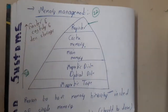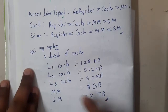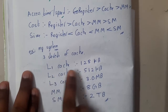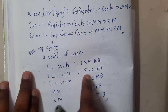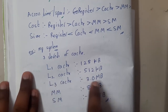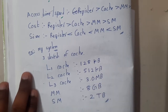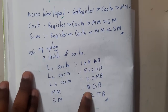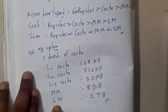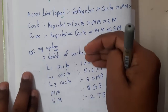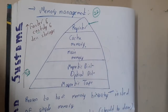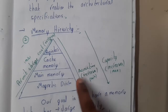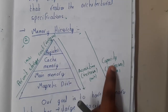Here is a real-time example using my system's specifications. My system has a three-level cache: Level 1 cache is 128 KB, Level 2 cache is 512 KB, and Level 3 cache is 3 MB — so the size increases as you go down. My RAM is 8 GB, and my secondary memory is 2 TB. Registers store around one, two, or eight bits. As we move down the hierarchy, the capacity increases.